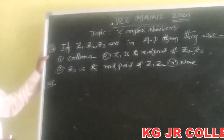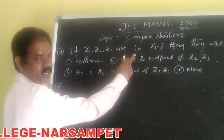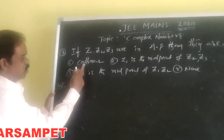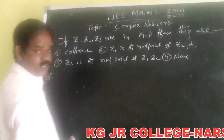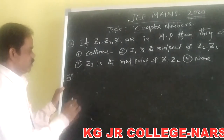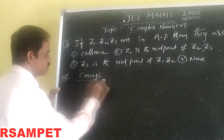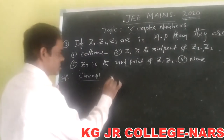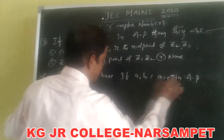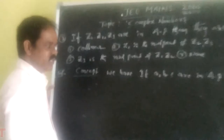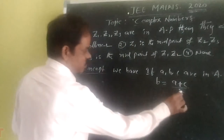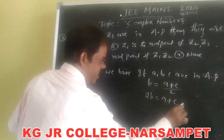Next, third problem: if z1, z2, z3 are in arithmetic progression, then they are — options: first, z1, z2, z3 are collinear; second, z1 is the midpoint of z2 and z3; third, z3 is the midpoint of z1 and z2; fourth option also given. First, learn the concept: if a, b, c are in arithmetic progression, then the condition is b equals (a + c) divided by 2, so 2b equals a plus c. This is the arithmetic progression condition.